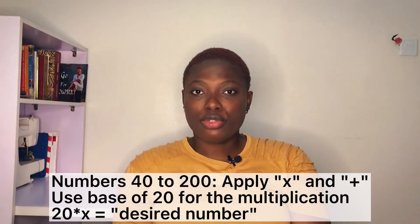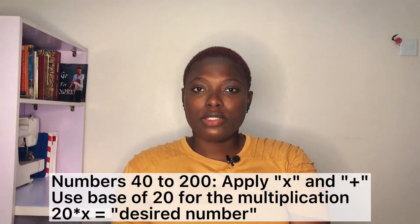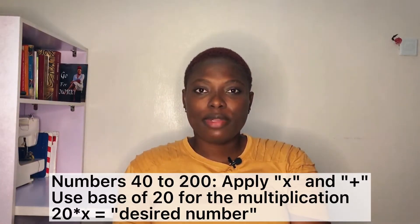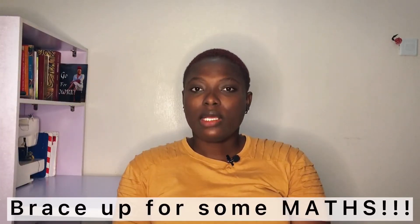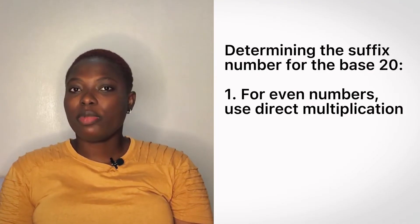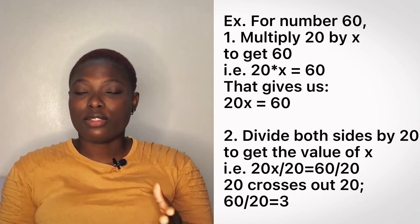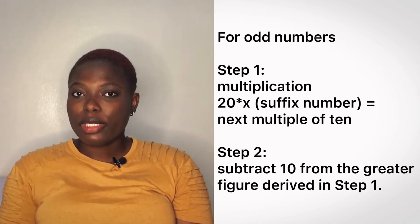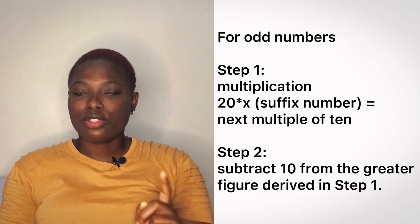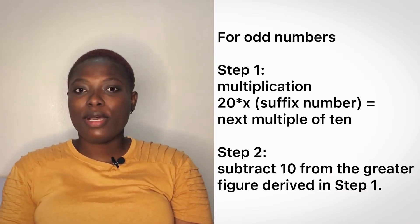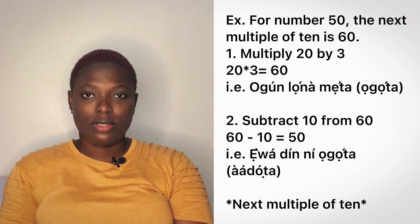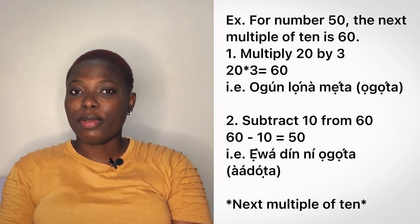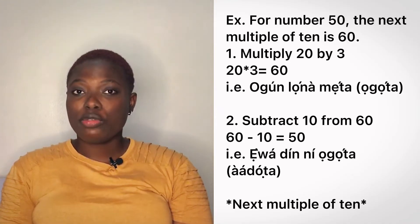From 40 to 100, we use multiplication, using 20 as the base and multiplying by a number that gives us the number we want. For even multiples of 20, you multiply directly. For instance, 60 is 20 times 3. For odd numbers, the trick is to multiply to get the next even number, then subtract 10. To achieve 50, multiply 20 by 3 to get 60, then deduct 10 to get back to 50.